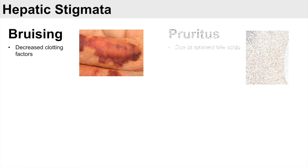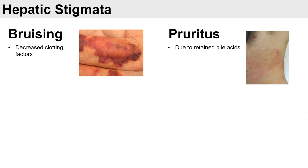The next sign of liver disease is pruritus, which is due to retained bile acids. Pruritus is itching, and it occurs in instances of cholestasis — where cirrhosis or a mass in the liver suppresses or reduces bile secretion — leading to retained bile acids. These retained bile acids cause the sensation of itching, and patients often develop excoriations from scratching so much.